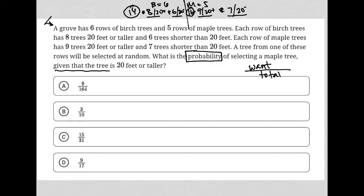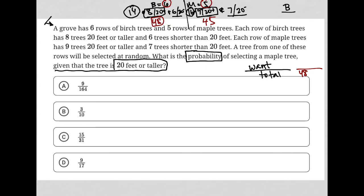Given that the tree is 20 feet or taller means we're only choosing from trees that are 20 feet or taller. For birch, eight trees per row are 20 feet or taller and there are six rows, so that's 48 birch trees that are 20 feet or taller. For maple, nine trees per row are 20 feet or taller and we have five rows, making 45 total maple trees that are 20 feet or taller. So altogether, given that the tree is 20 feet or taller, I have a total of 93 trees.